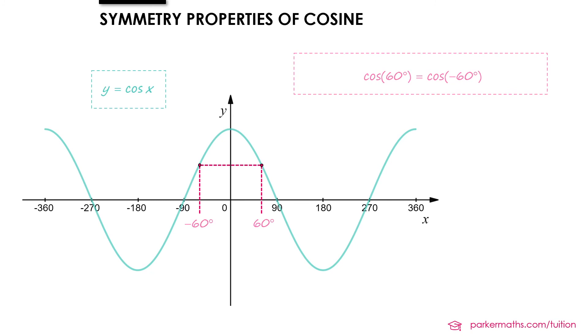More generally, if we took a value of theta on the right, we would get minus theta on the left. And so we can say cos theta equals cos minus theta. So this is another useful symmetry property as well.